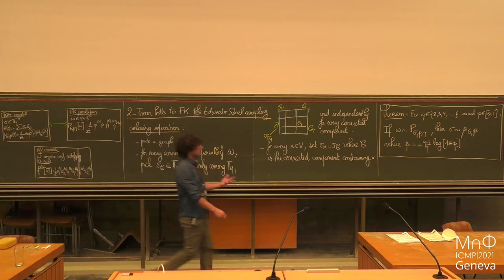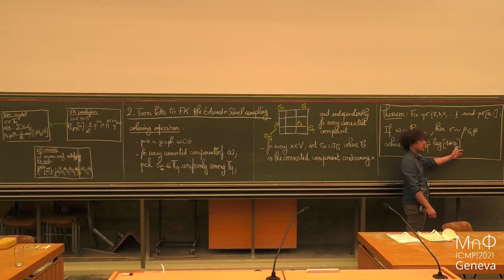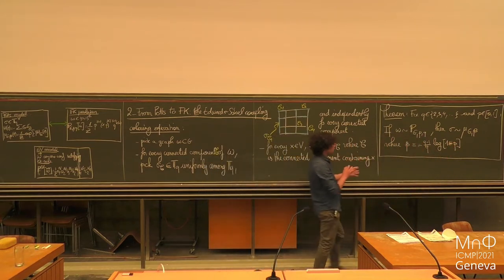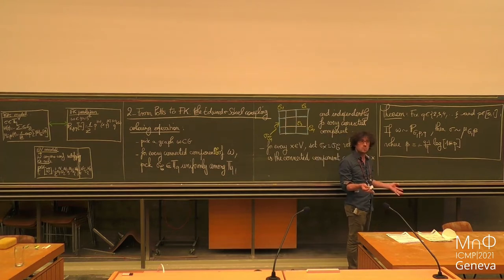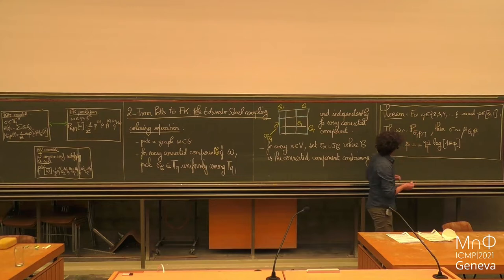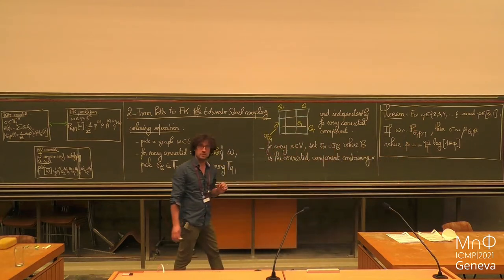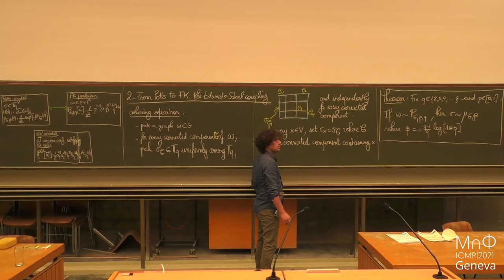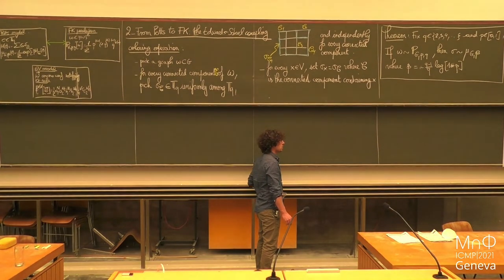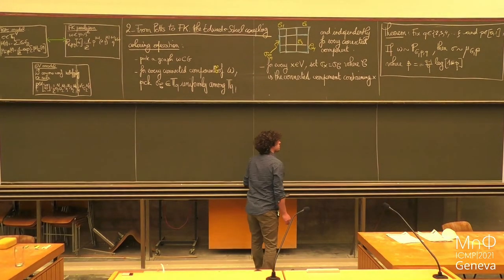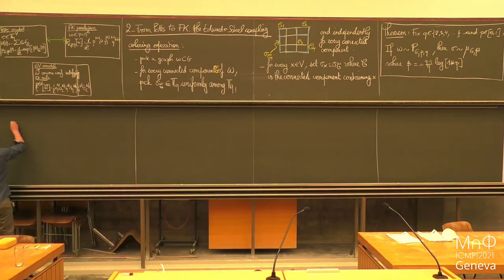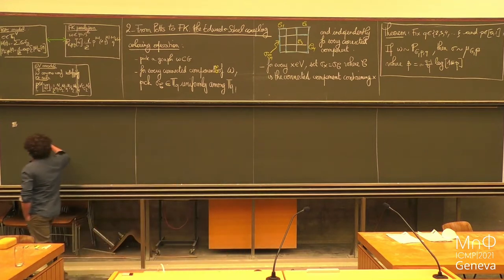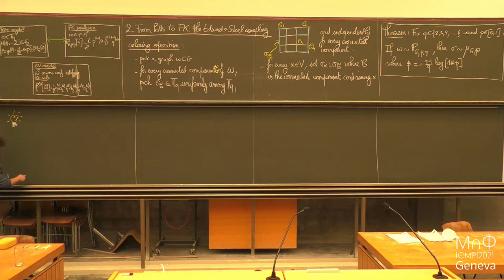This inverse temperature is easily expressible in terms of the original parameter P. Of course, it's a link only when Q is an integer. So really here we think of Q as an integer, but it's a very useful link. Maybe before telling you about the proof, let me give you one application of this link.